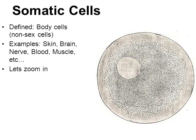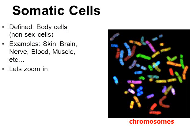Let's zoom on in even further. I just highlighted the nucleus of a skin cell. Let's zoom on in to that nucleus and see what's inside. When we look inside the nucleus of cells — whether it's a nerve cell, a skin cell, or a brain cell — we find chromosomes. These stained rainbow-shaped structures are chromosomes.